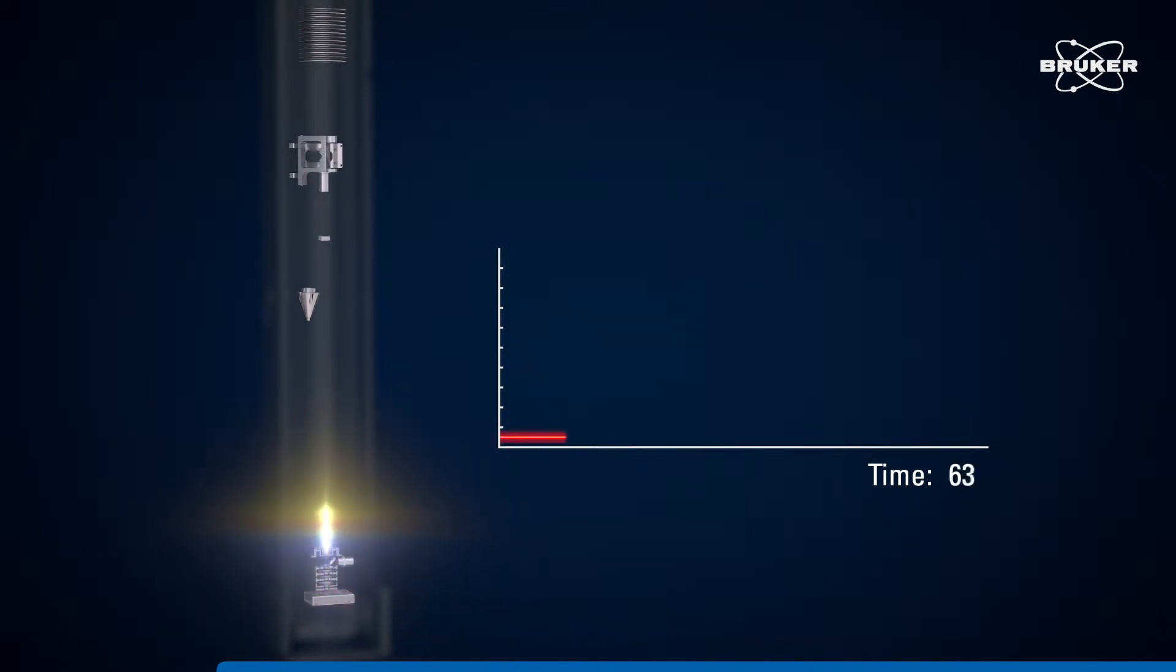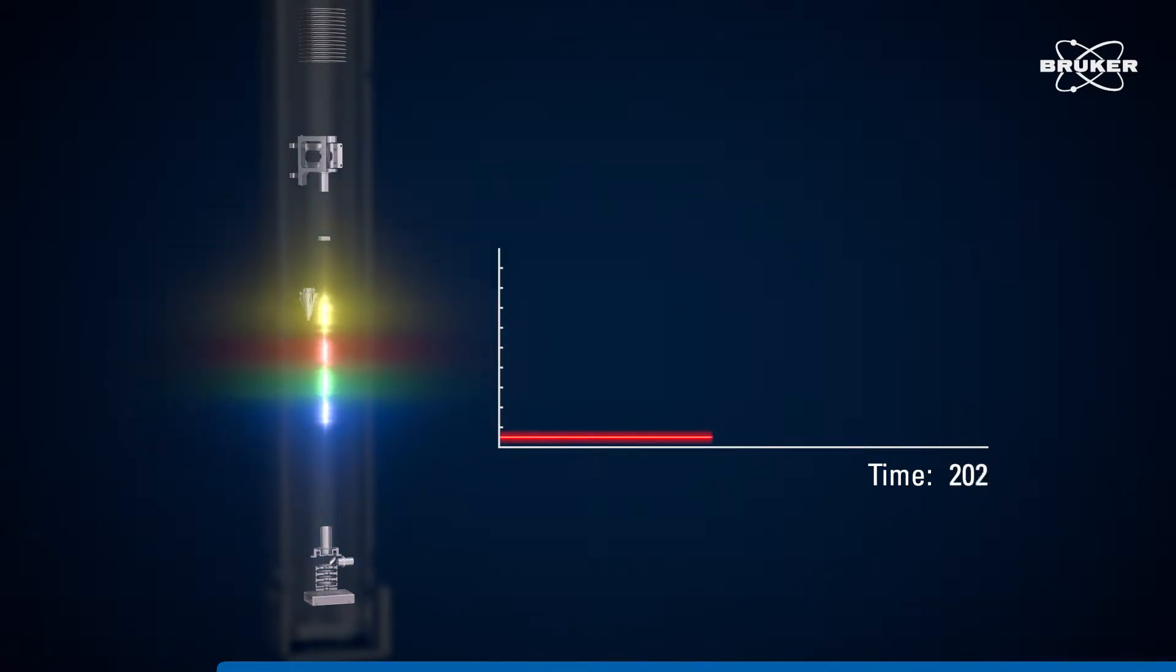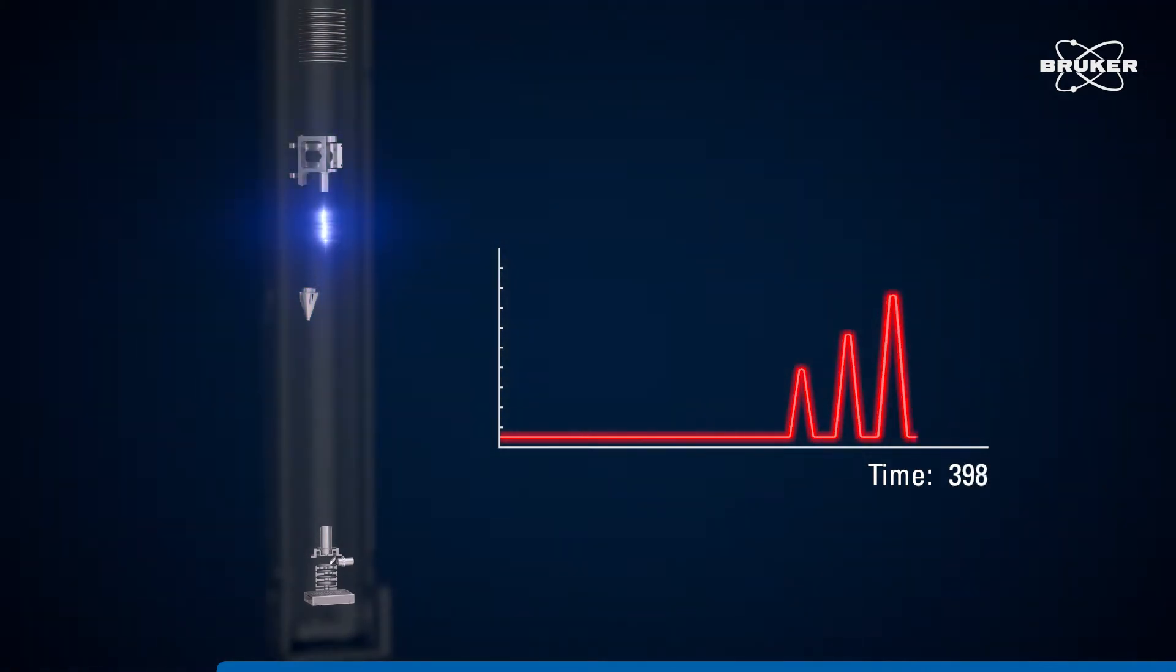Flight time measurements make it possible to determine molecular masses directly. Each peak in the spectrum corresponds to the specific mass of the particle along the time axis, starting with the ionization moment.